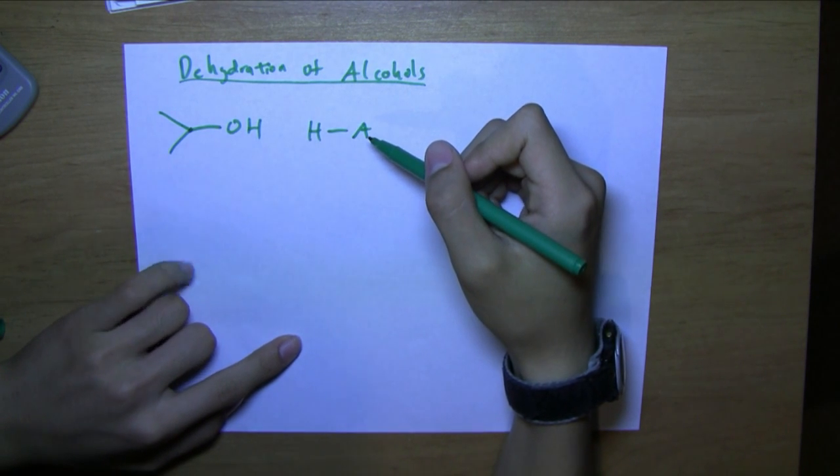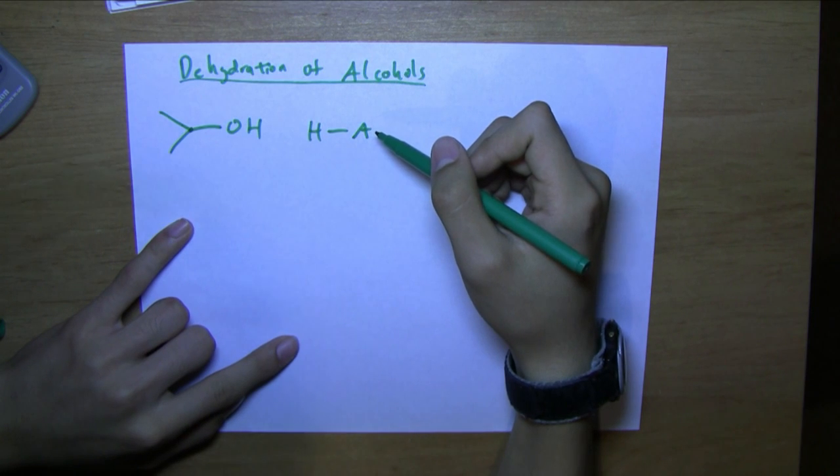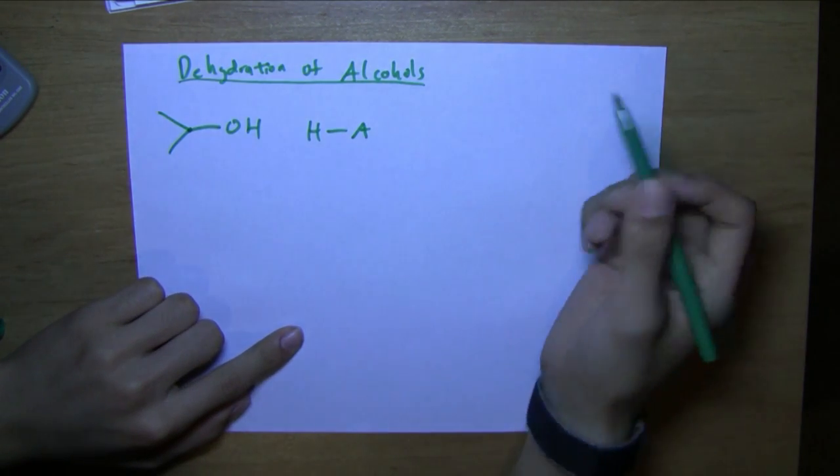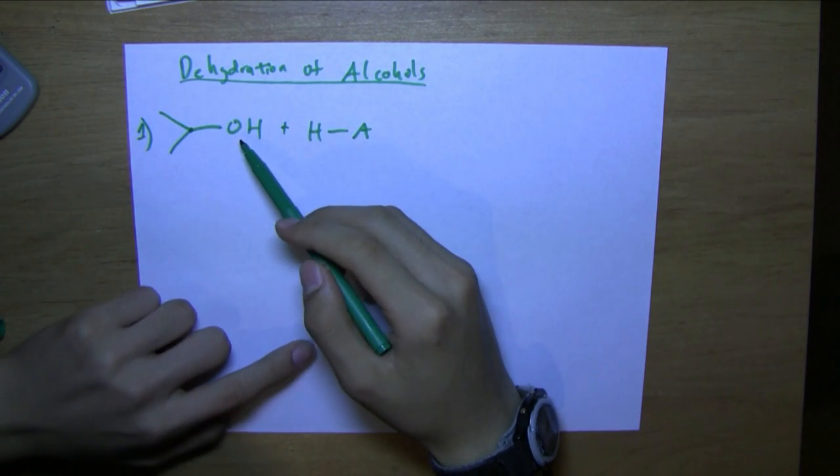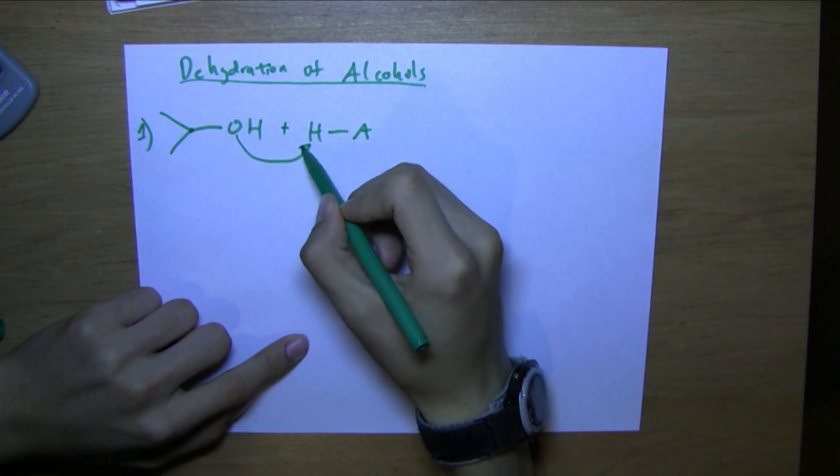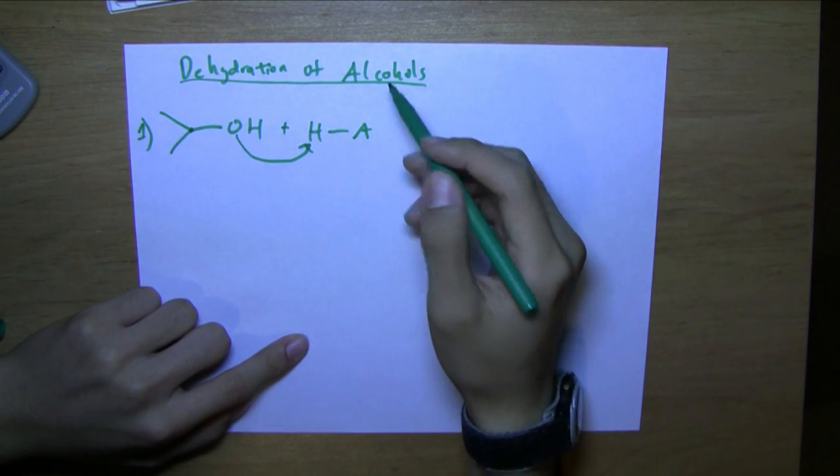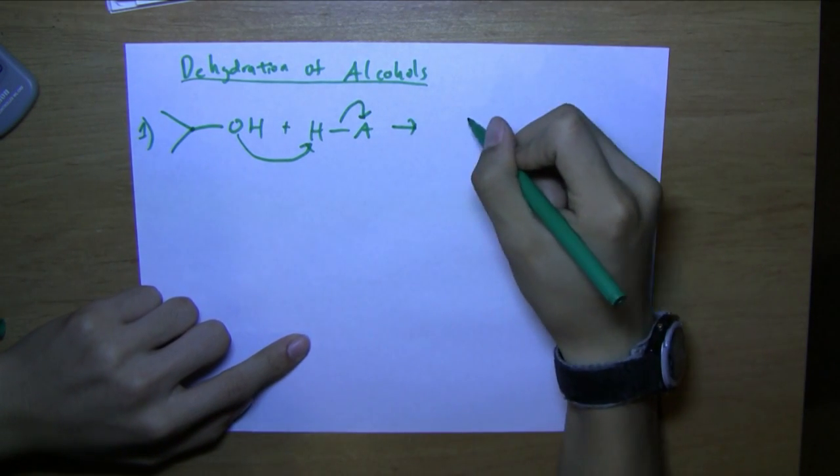I think in most reactions we use H2SO4 or H3PO4, but any strong acid will do. The first step is going to be the oxygen donating its electrons to the hydrogen, and then this hydrogen-acid bond will donate its bond to the acid. And we get this as a product.